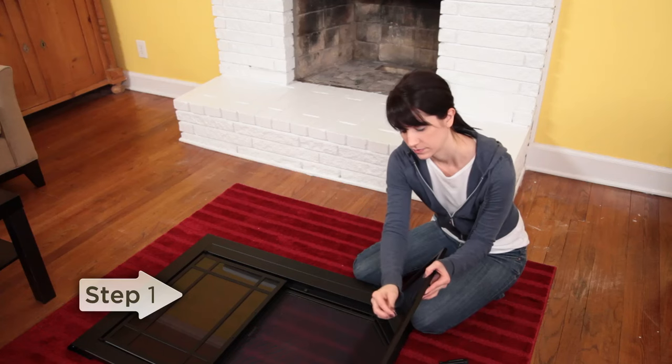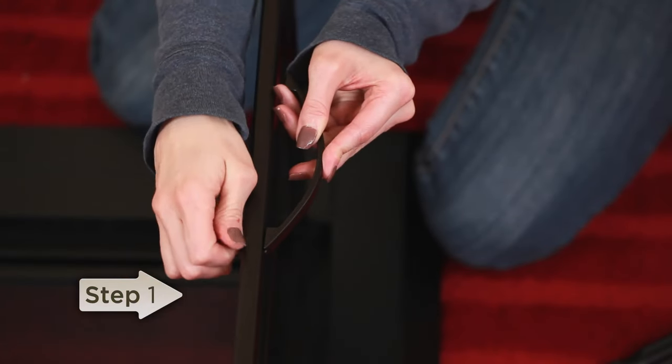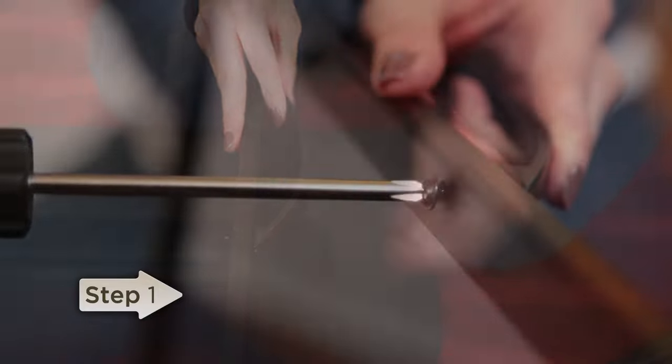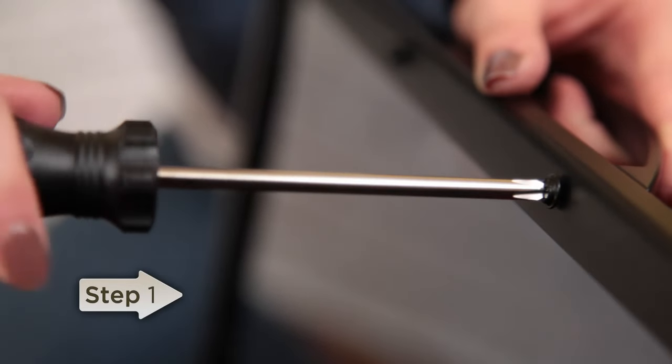Step one, mount the door handles. Using the screws provided on the handles, attach the left and right door handles to the glass doors.